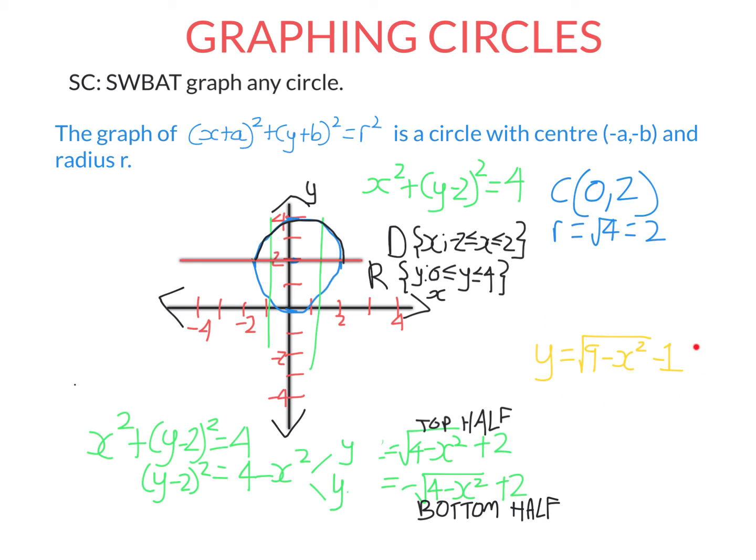So if I wanted to graph this one, because it's the positive square root, it will be the top half of a circle. So let's write this equation in this form, so I know which circle I'm talking about. So what I'm going to do first is add 1 to both sides. Now I'm going to square both sides of this equation. And finally, what I can do is add x² to this side.